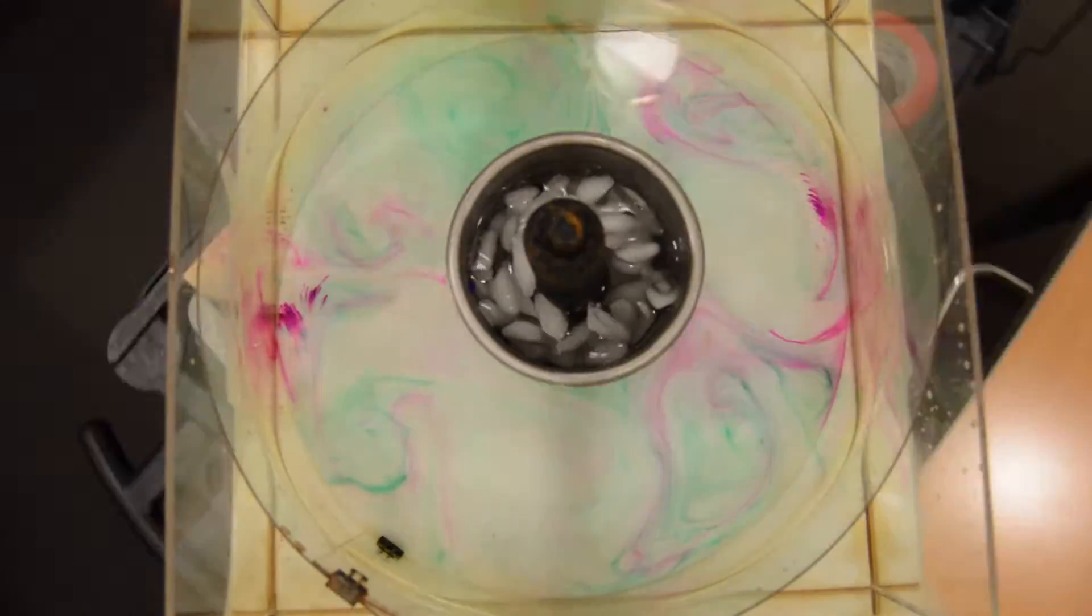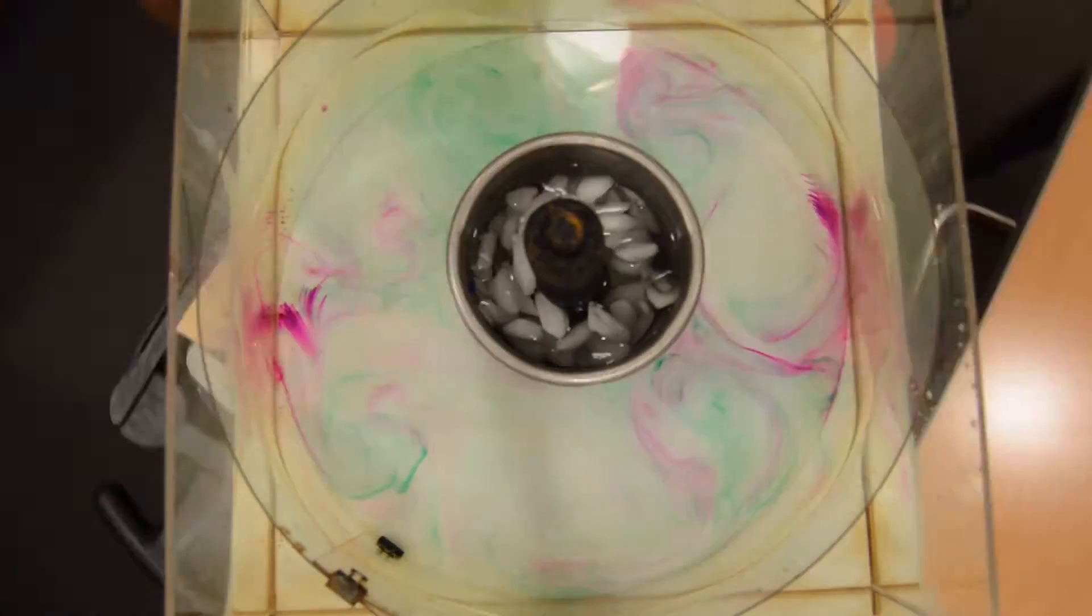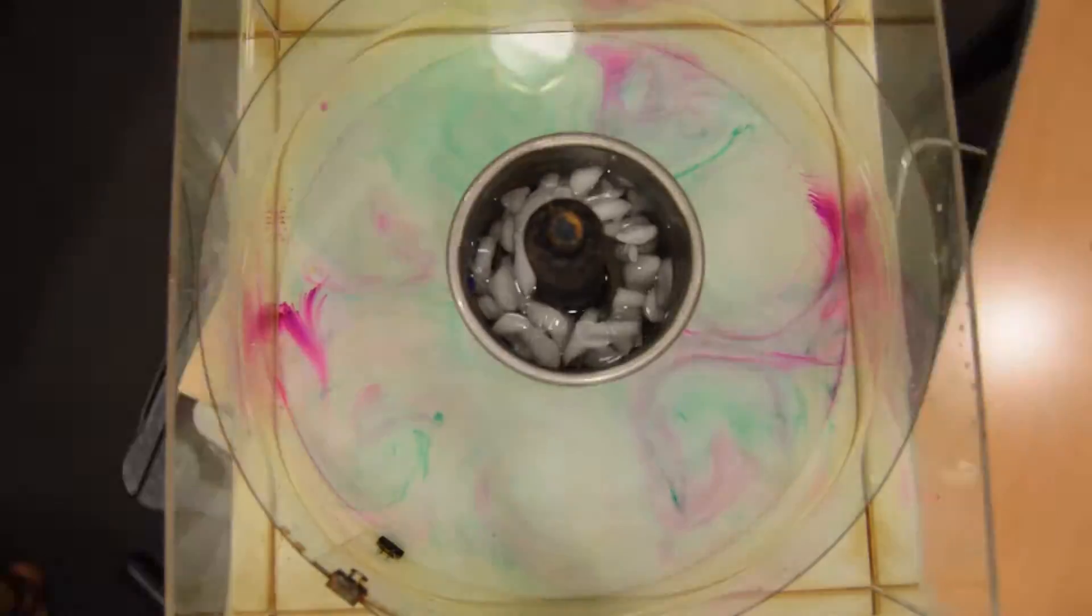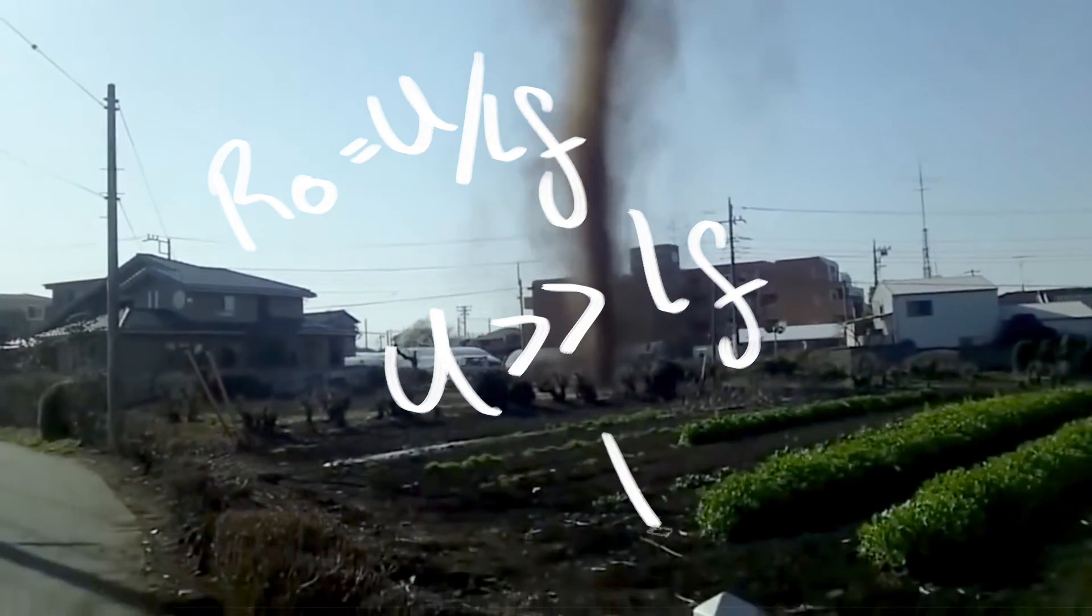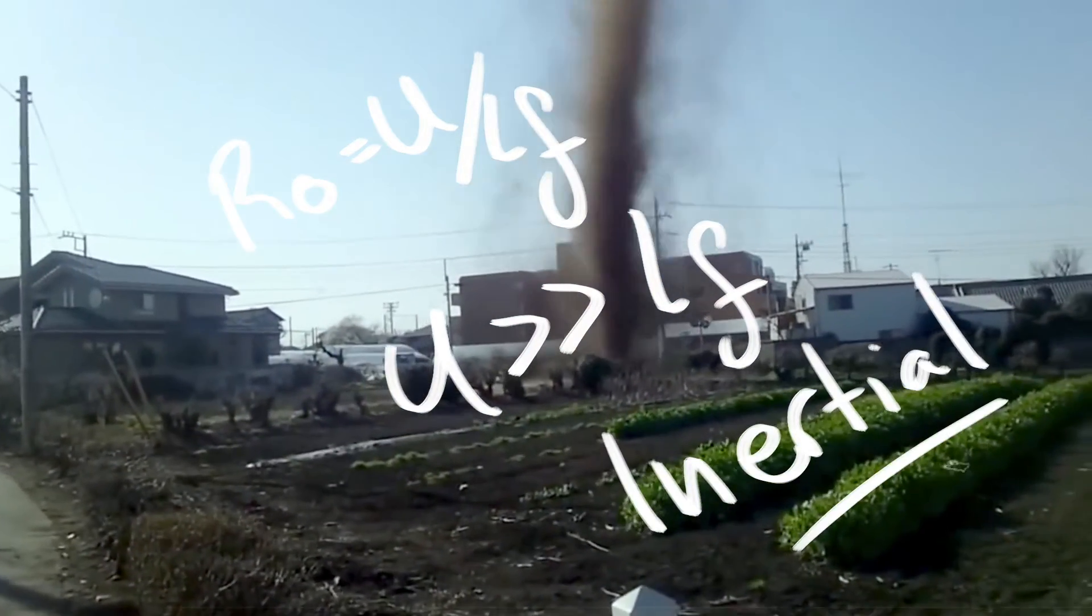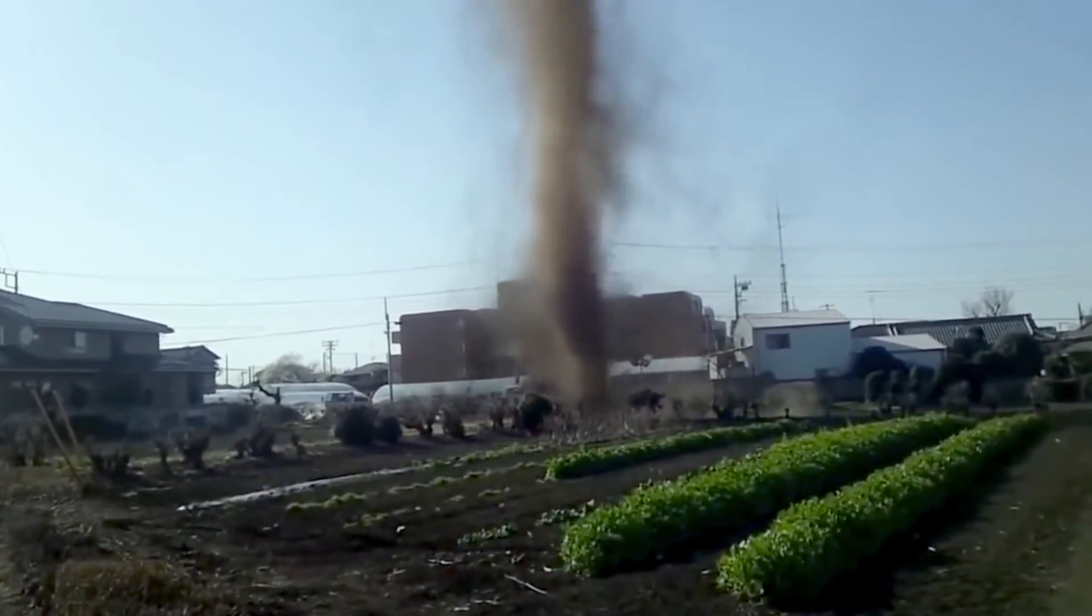A large Rossby number tells us that the inertial and centrifugal forces dominate, and this can be in the case of a small length scale or a large velocity. For example, in a tornado. Wait, are you just reading from Wikipedia? No.